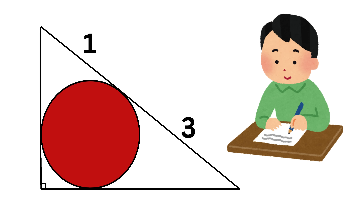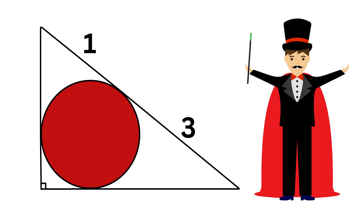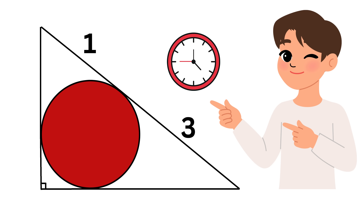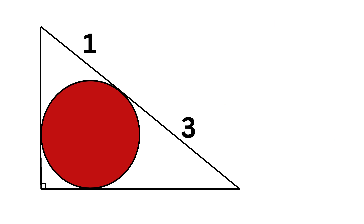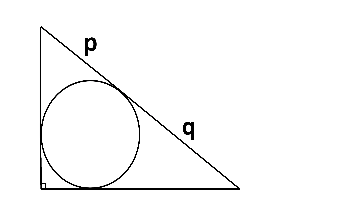I will first show the classical way to solve this problem, and then reveal the trick to solve it in just one second. As a first step, we'll generalize by labeling one piece as p, the other as q, and the radius of the inscribed circle as r.